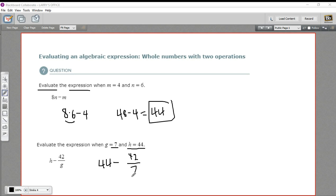We need to do this division problem first. So this is 42 divided by 7. That's 6. So this is 44 minus 6, which is 38.